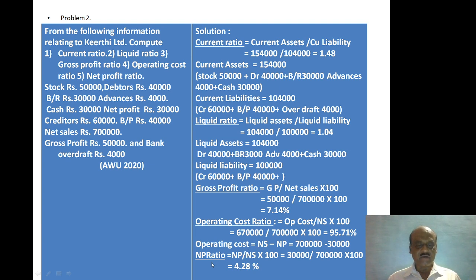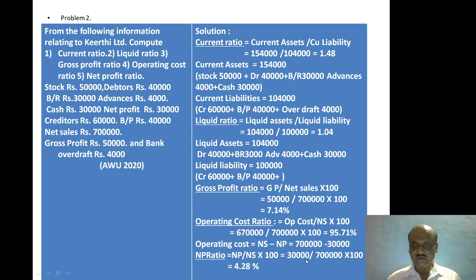Net profit ratio formula: net profit divided by net sales into 100. Net profit is Rs. 30,000, net sales is Rs. 7,00,000. So Rs. 30,000 divided by Rs. 7,00,000 into 100 = 4.28% is the net profit ratio.